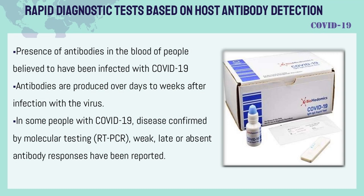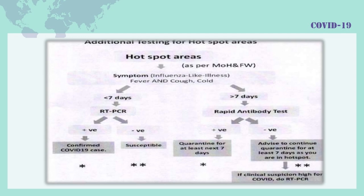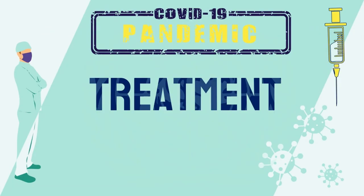Rapid diagnostic tests based on host antibody detection look for the presence of antibodies in the blood of people believed to have been infected with COVID-19. Antibodies are produced over days to weeks after infection with the virus. In some people with COVID-19 confirmed by molecular testing (RT-PCR), weak, late, or absent antibody responses have been reported.